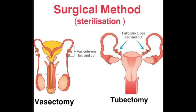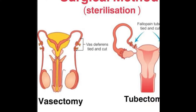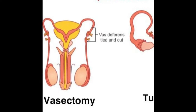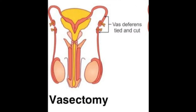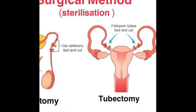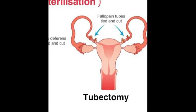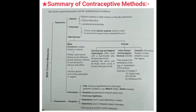Moving to the next method: sterilization or surgical method. This method is used by both males and females and is a permanent method — unlike methods one through five, which are all temporary. In this method, the passage that transports the gamete is blocked. There are two types: vasectomy for males, where the vas deferens is cut and tied; and tubectomy for females, where the fallopian tube is cut and tied. You can see in the image how both are done. A summarized form of contraceptive methods is included in the video — you can pause and screenshot it for exam use.